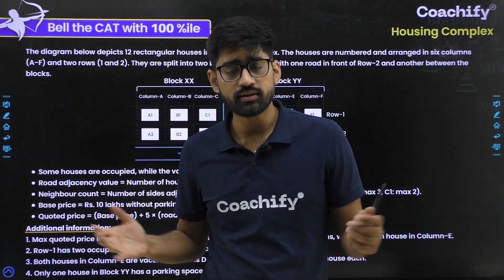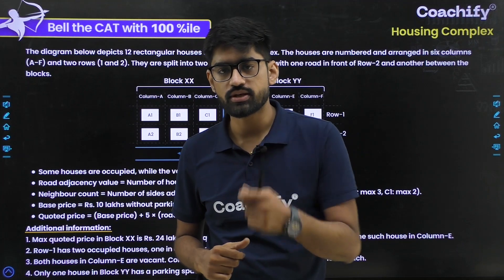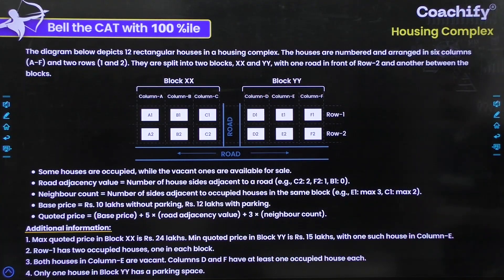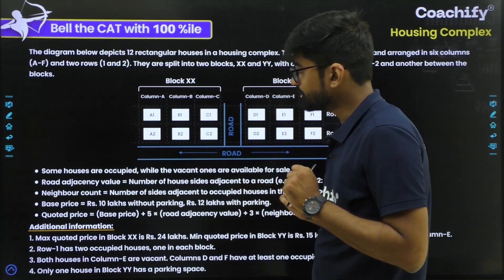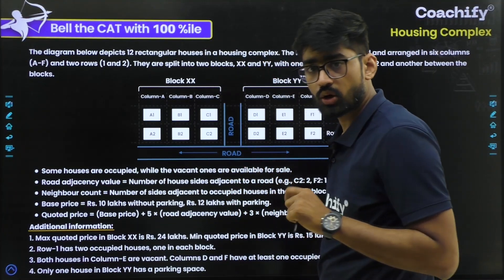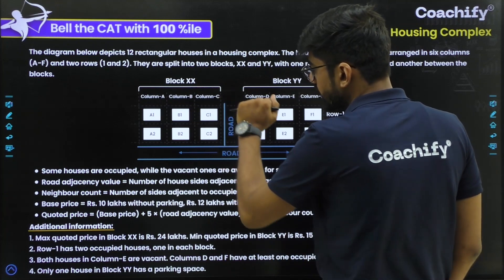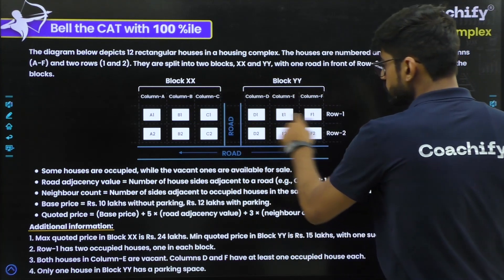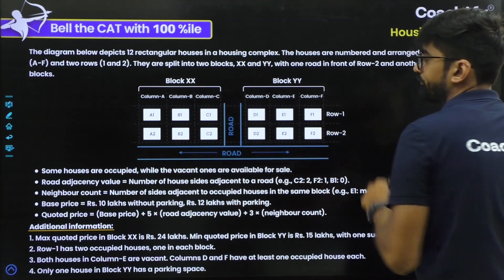As we do every time, first you have a screenshot — try it yourself, and then watch my solution. So I'll quickly explain this puzzle to you. We are provided with a block diagram of 12 houses: 6 in block XX and the remaining 6 in block YY. There are 2 rows — row 1 and row 2 — and there are 6 columns from A to F.